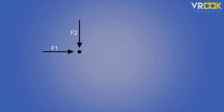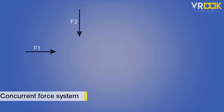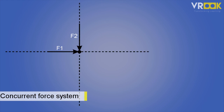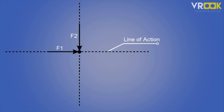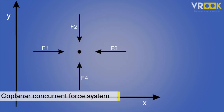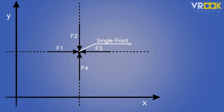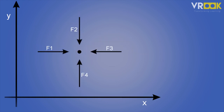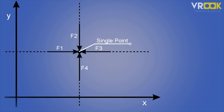In coplanar forces, we have subtypes. If the line of action of all the forces passes through a single point, it is called a concurrent force system. The line of action is a straight line through the point on which the force is acting. If we combine both cases — coplanar and concurrent — we have a coplanar concurrent force system. This means the forces act on a body in a single plane and the line of action of all these forces passes through a single point.